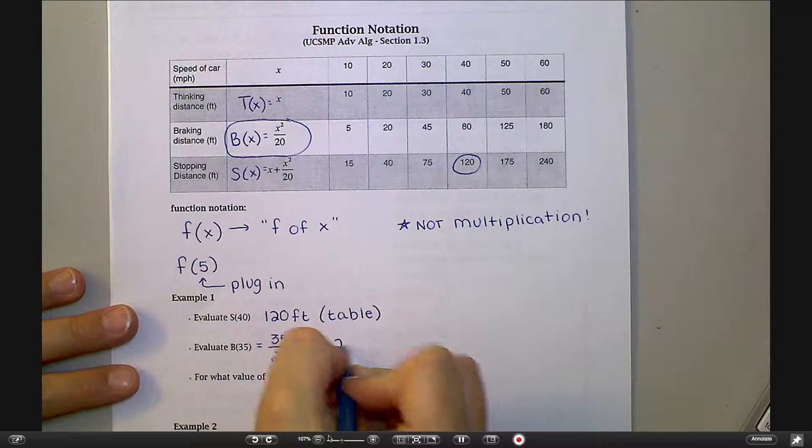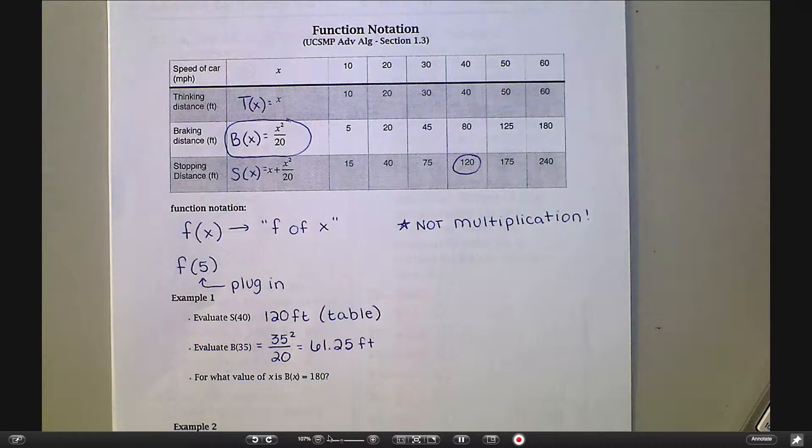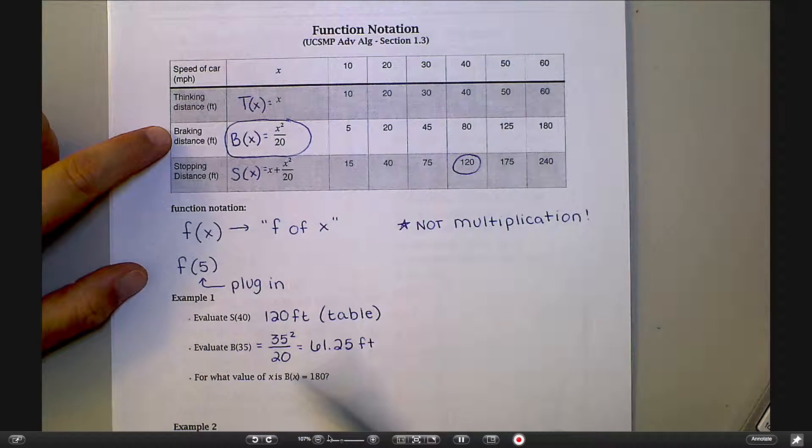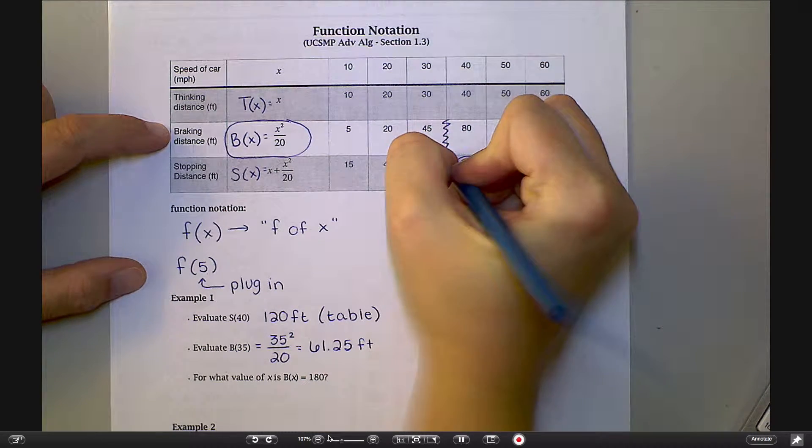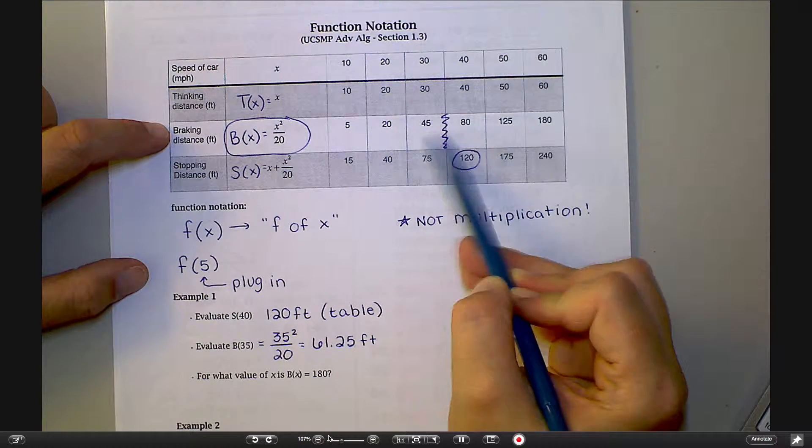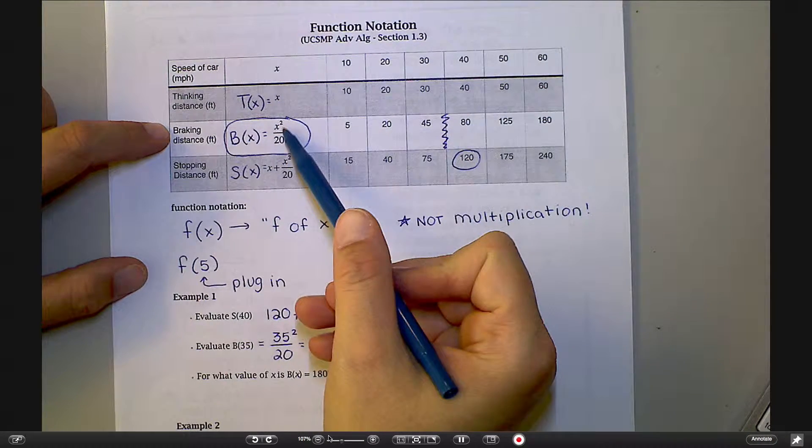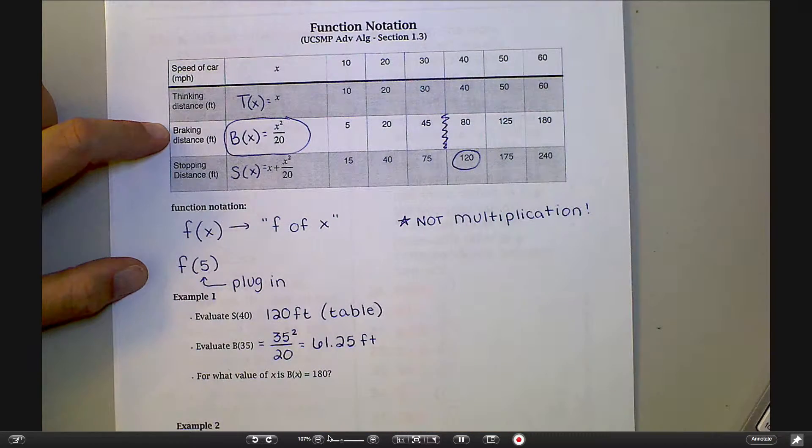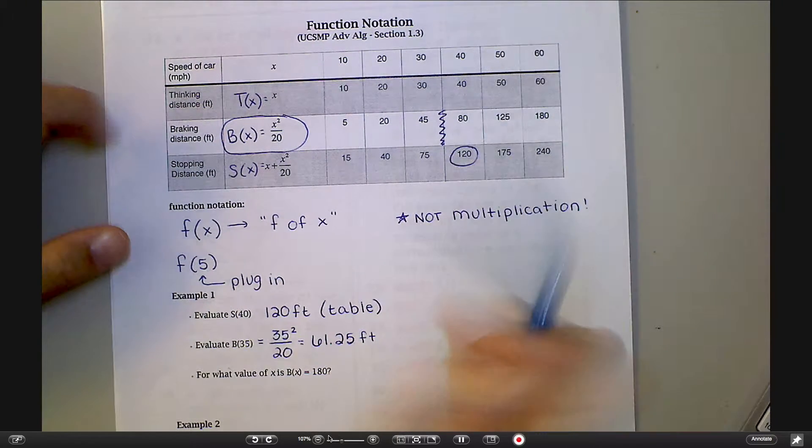What I would ask yourself in a situation like this is does that kind of jive with what's already in the table? For braking distance at 35 miles an hour, that's going to be somewhere between 30 and 40, right? Does that number make sense with what we see here and here? If you went somewhere in between - now it's not going to be exactly in between because this isn't a linear function, we'll talk more about that when we talk variation - but if it's somewhere in between, if it seems reasonable, then you're okay.